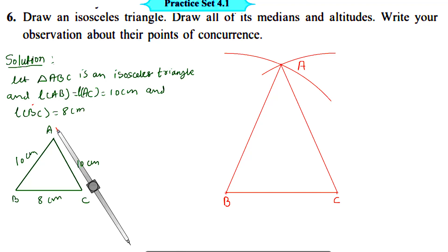The second part of this question is to draw all of its medians and altitudes. First, draw the medians. We know that a median is a segment joining the vertex of a triangle to the midpoint of the opposite side. So let us first find out the midpoint of all three sides of the triangle with the help of a compass. Take a convenient distance in the compass and draw arcs above and below BC.